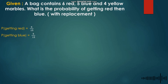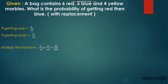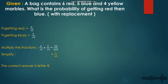We multiply the fractions: 6 over 15 times 5 over 15. Six times 5 gives us 30, and 15 times 15 gives us 225. Simplifying 30 over 225 gives us 6 over 45. Therefore the probability of getting red then blue with replacement is 6 over 45, and the correct answer is Letter B.